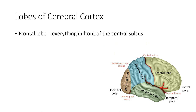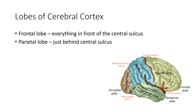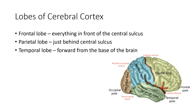Now let's look at the different sections of the cerebral cortex. The frontal lobe is everything in front of what we call the central sulcus — this whole front portion. In profile view, the person is facing right. Just behind the central sulcus is the parietal lobe. The temporal lobe is more forward toward the base of the brain, around your ear region. In the very back portion of the brain is the occipital lobe.